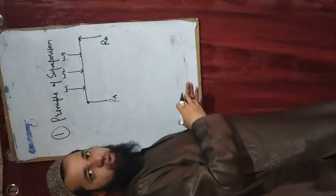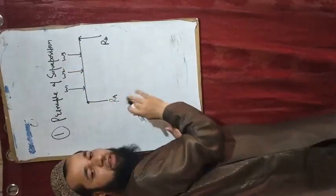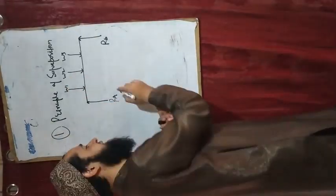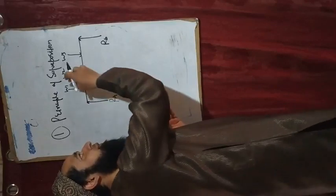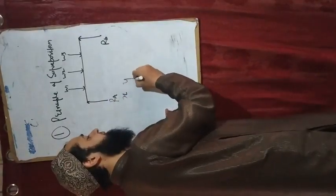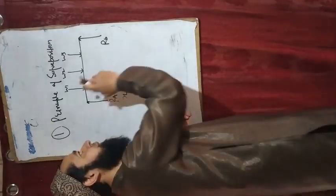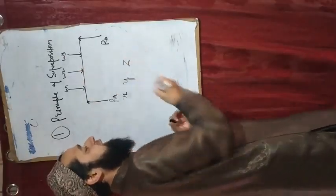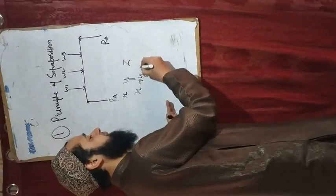The principle of superposition is simply saying this: if you apply only W1, the reaction at A is X. If you apply only W2, the reaction is Y. If you apply only W3, the reaction is Z. So from W1 the reaction is X, from W2 the reaction is Y, and from W3 the reaction is Z.